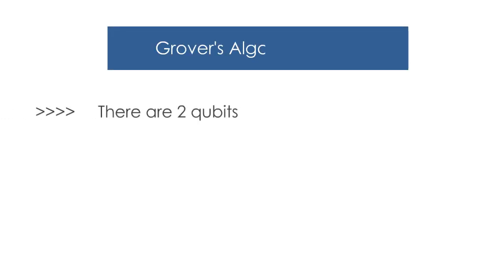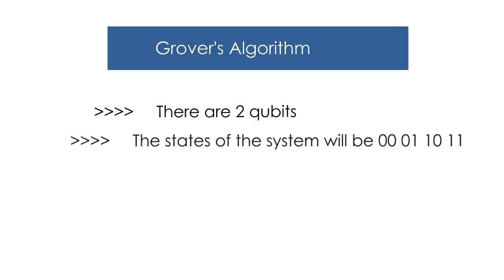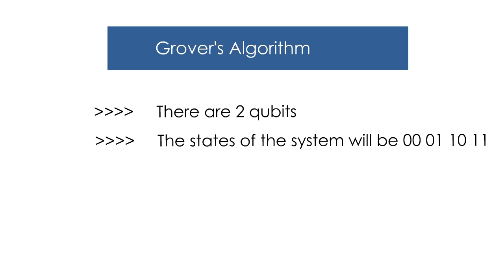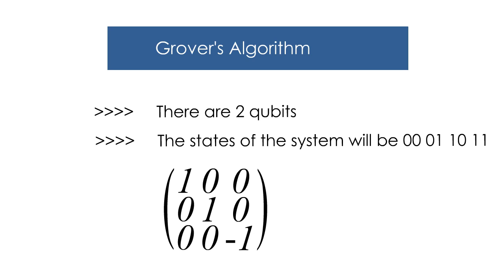There are two key qubits for Grover's algorithm, so the states of the system will be 00, 01, 10, and 11. To do the marking, a diagonal matrix is prepared where one element is minus one and the others are one.